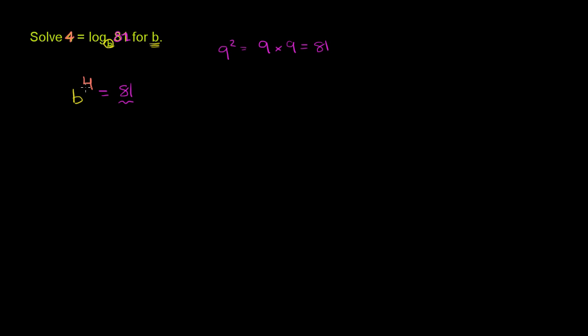Or another way to say that is 9 squared equals 81. But we have to raise something to the fourth power. But 9 itself is 3 times 3. So one 9 is 3 times 3, and then you multiply it by another 9, that's another 3 times 3.